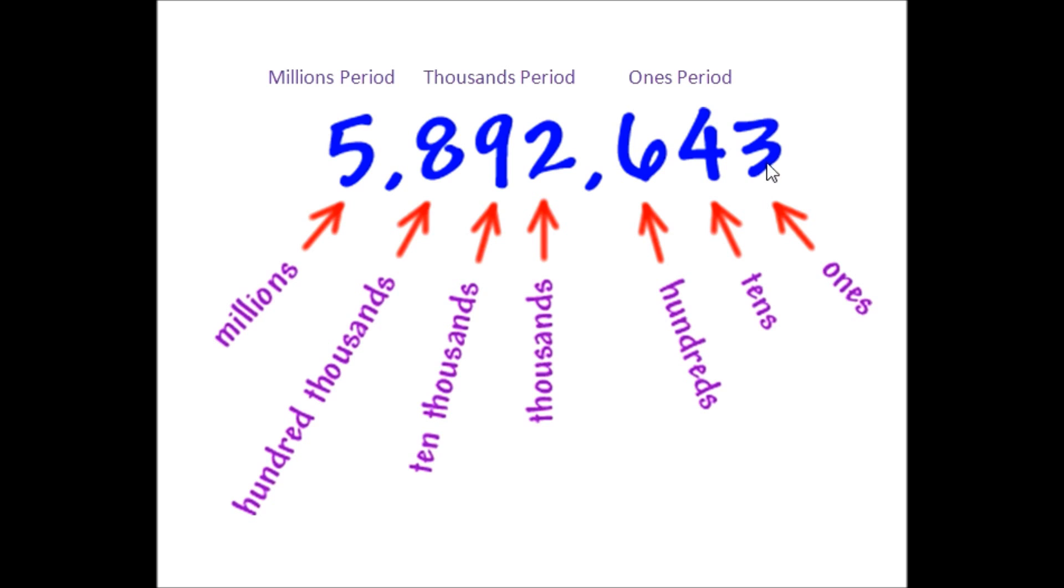It's helpful also to know that each place value has a name, and it follows this pattern: ones, tens, hundreds. So here, the 3 is in the ones, the 4 is in the tens, the 6 is in the hundreds.